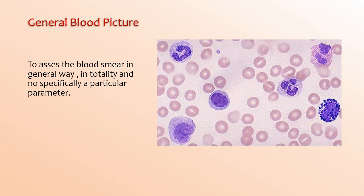Firstly, scan the whole film to get an idea of the quality of the preparation. Assess whether red cell agglutination, excessive rouleaux formation, or platelet clumps are present. Then assess the number, distribution, and staining of the leukocytes — you can say they are normal, increased, or decreased.